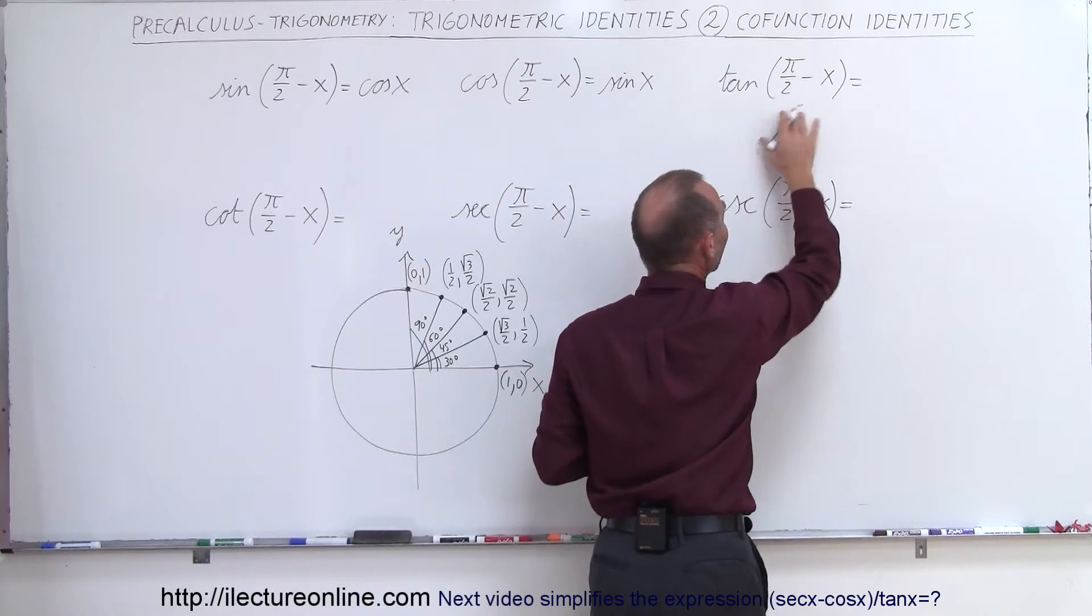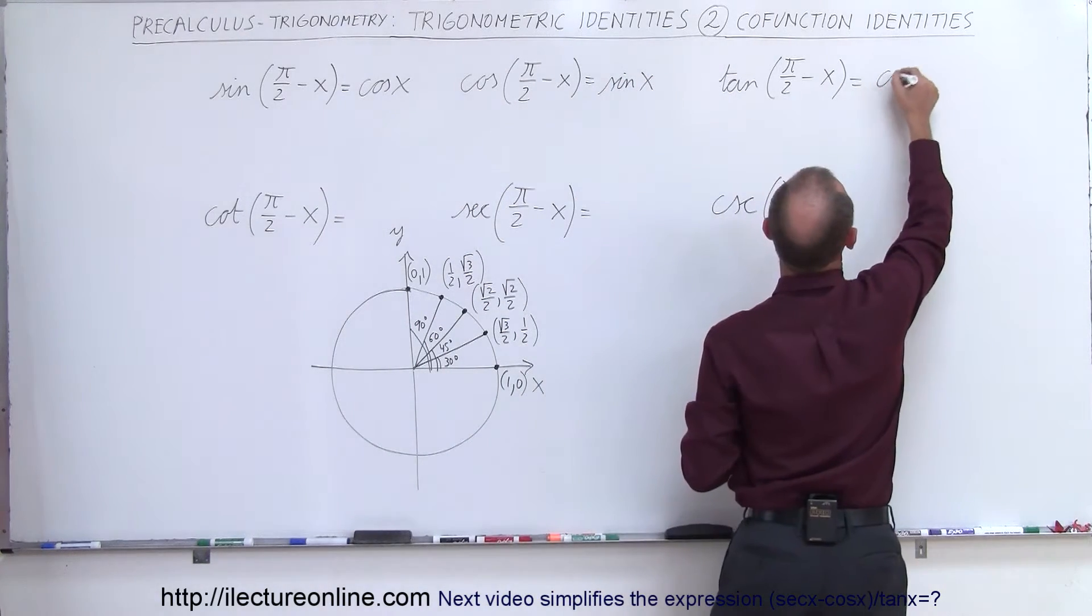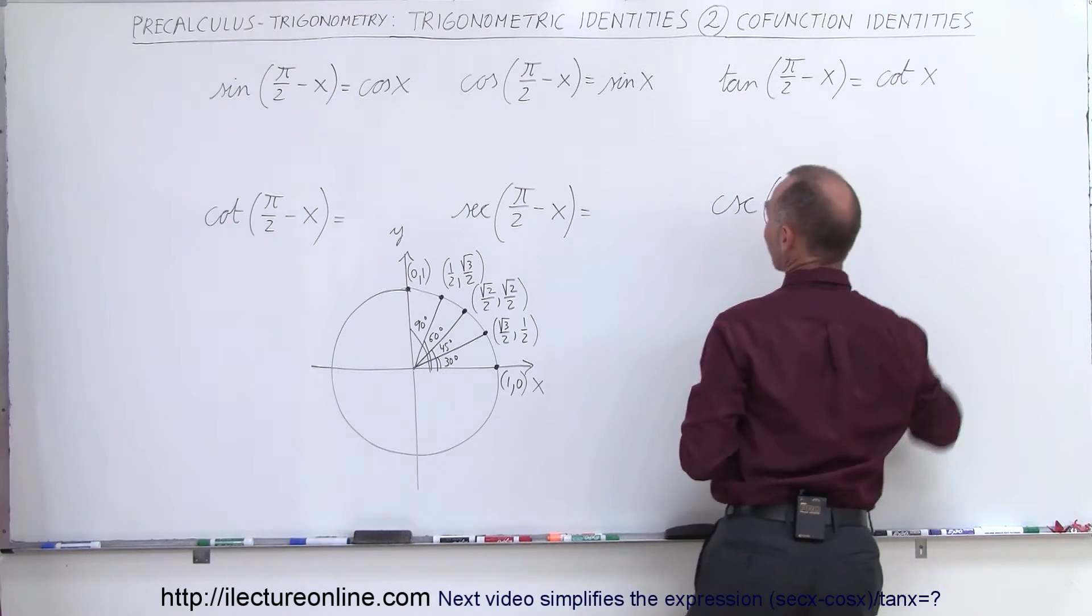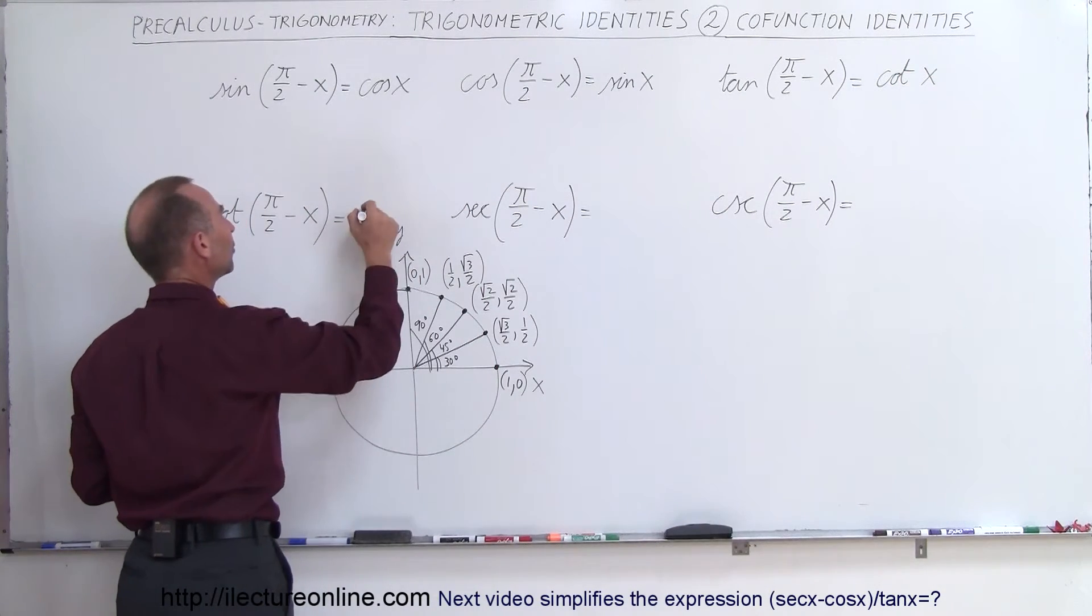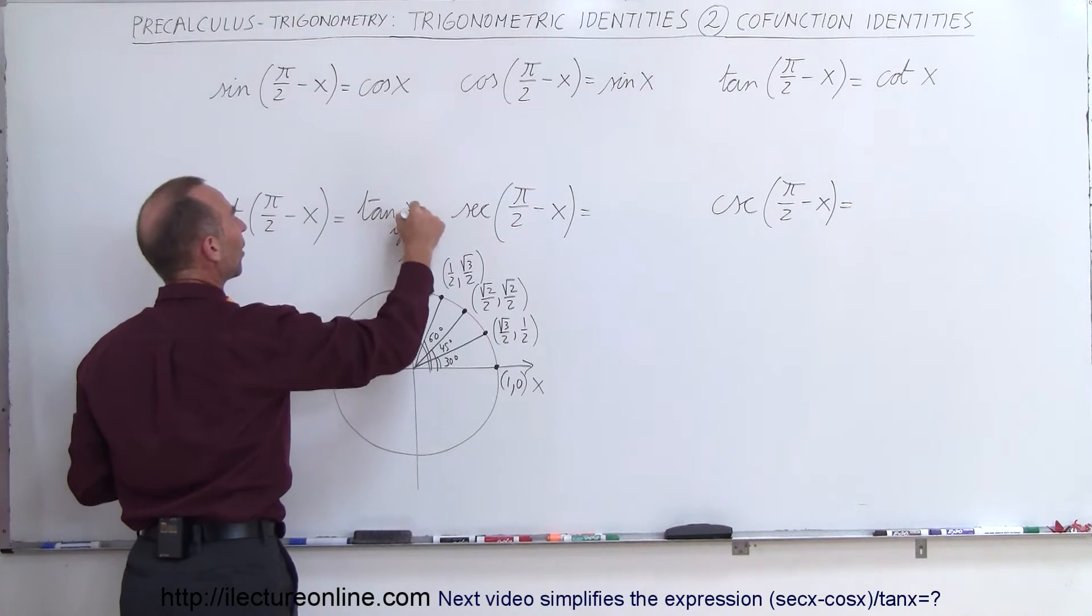And the tangent of pi over 2 minus x is equal to the cotangent of x, and the cotangent of pi over 2 minus x is equal to the tangent of x.